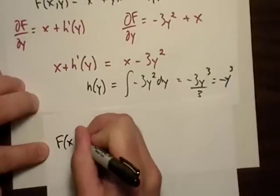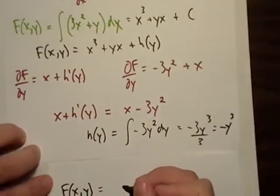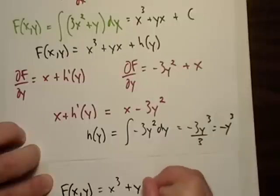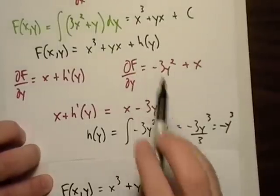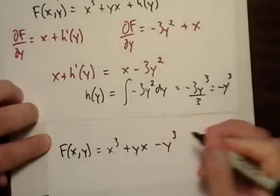So, F(x,y), remember, was equal to this right here. It was equal to x cubed plus yx plus h(y). h(y) turned out to be negative y cubed.